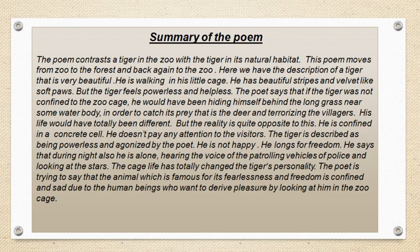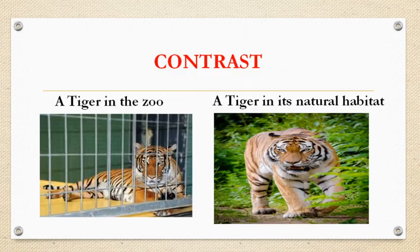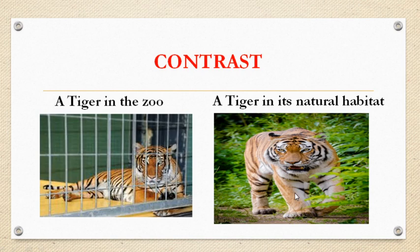But when we keep these animals in the zoo, we take away their freedom, and freedom is very important for survival. When somebody snatches our freedom, how do we feel? Now let us see this contrast. A tiger in the zoo is very furious and angry, whereas a tiger in its natural habitat is living life on his own terms and conditions. Here in the zoo, this fellow cannot do anything — the zoo cage is very small.